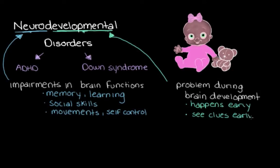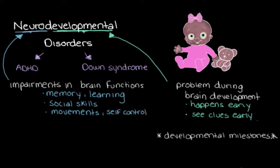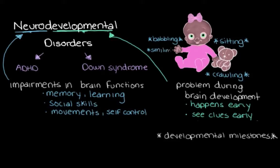We can see these clues often pretty early on, sometimes within the first few months or maybe the first few years of life. We get clued in to any potential developmental issues by comparing the developmental milestones of any given child to normal developmental milestones. Examples include a baby sitting up without being supported, crawling, babbling, fully talking, smiling, or making eye contact. These milestones should be happening early on, and we know about when they're supposed to happen — they help us track that the brain is developing normally.